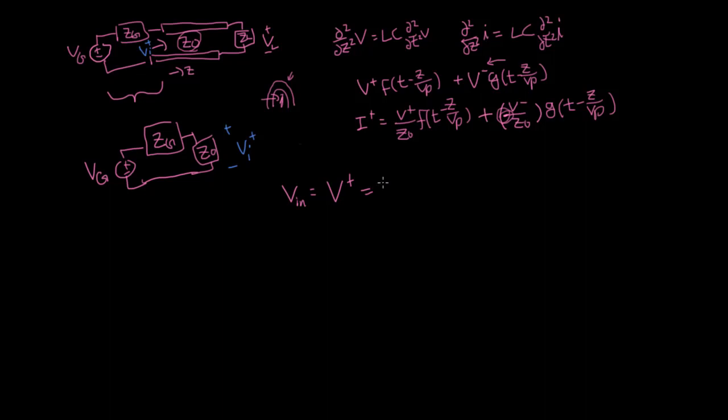So that's going to be Z naught over Z naught plus ZG. So this is the first thing that we need. We turn it on, and if everything's uncharged, we say, okay, what's the initial voltage that goes into this transmission line? And that's this value here.